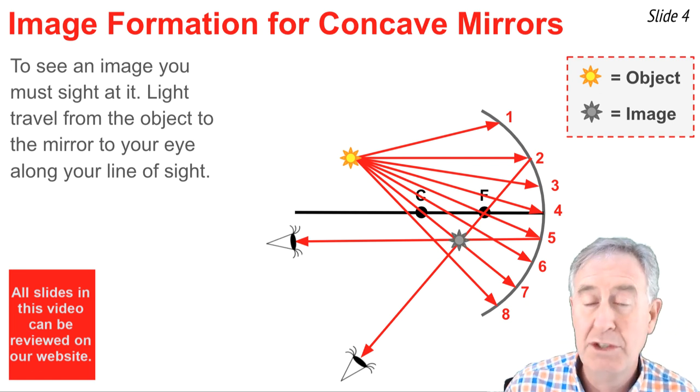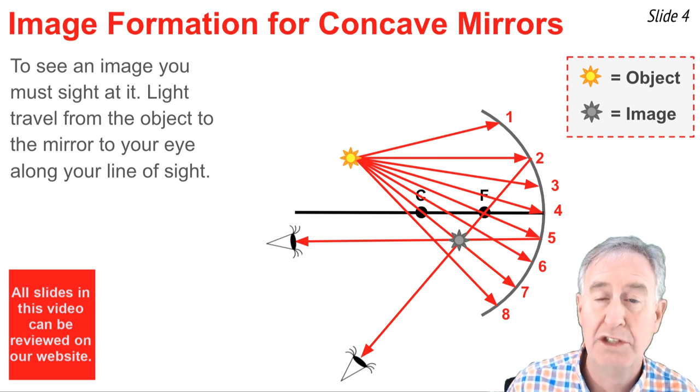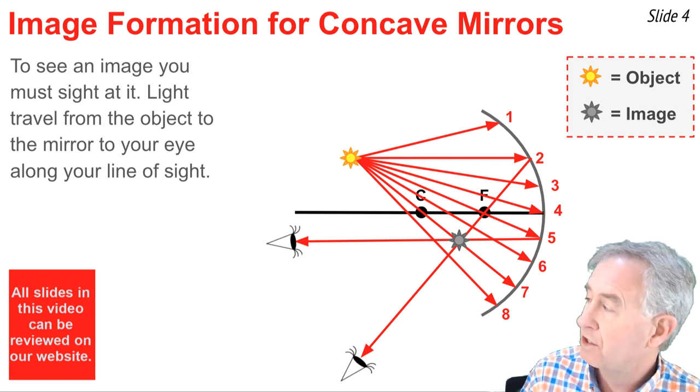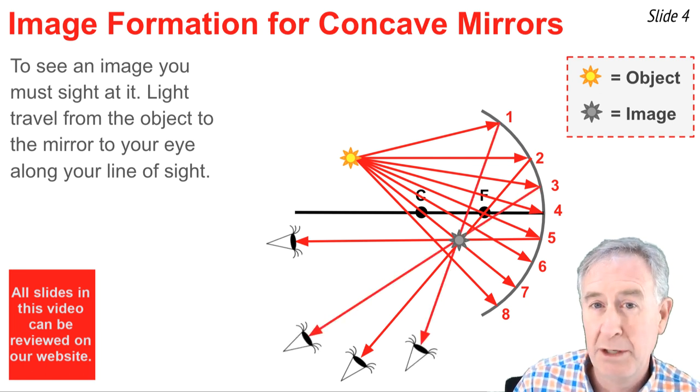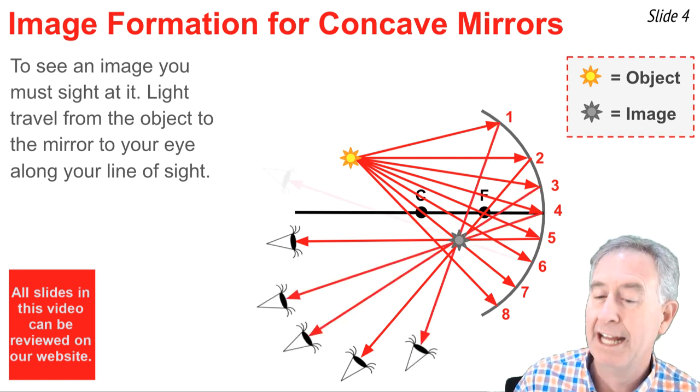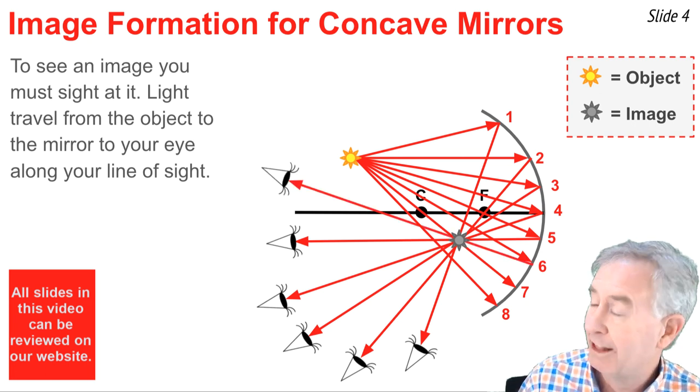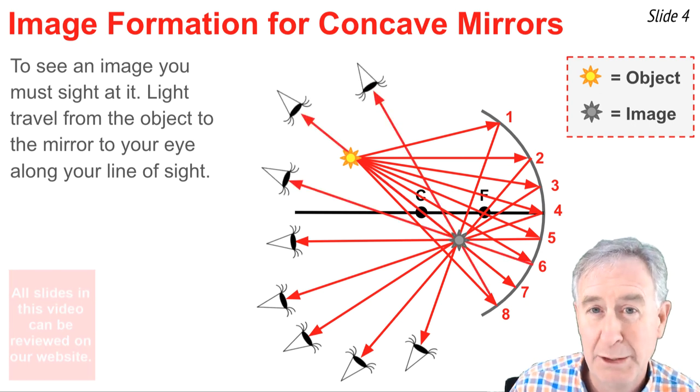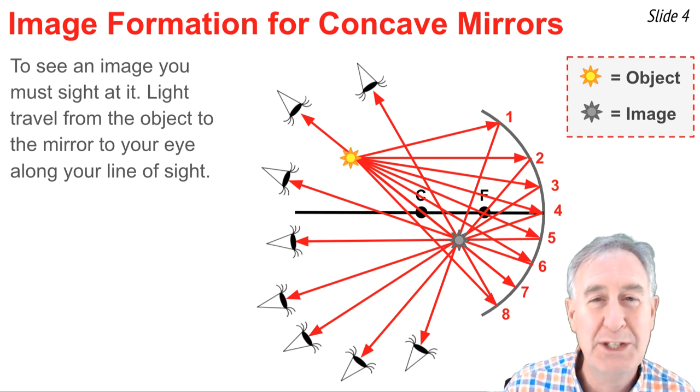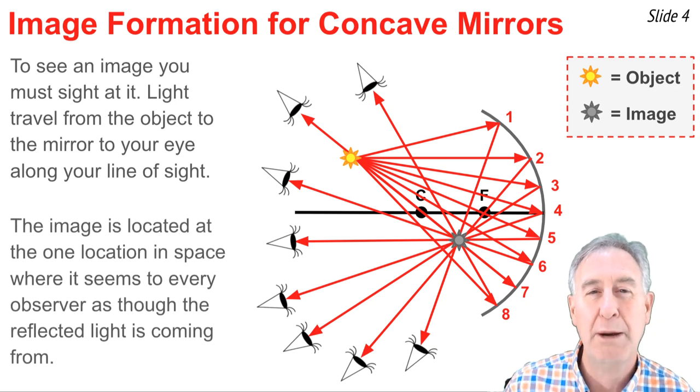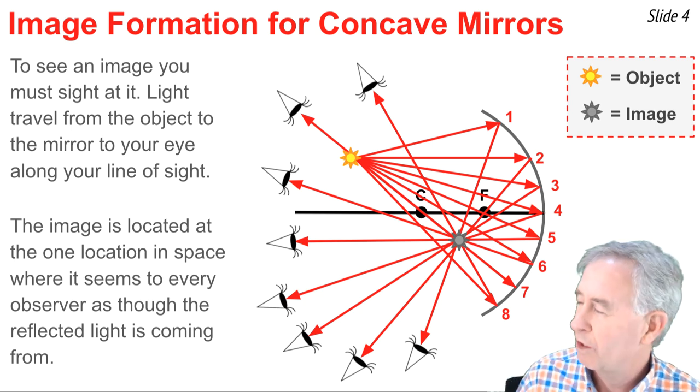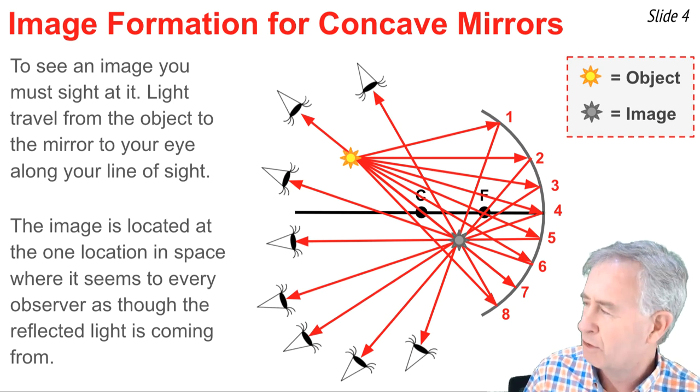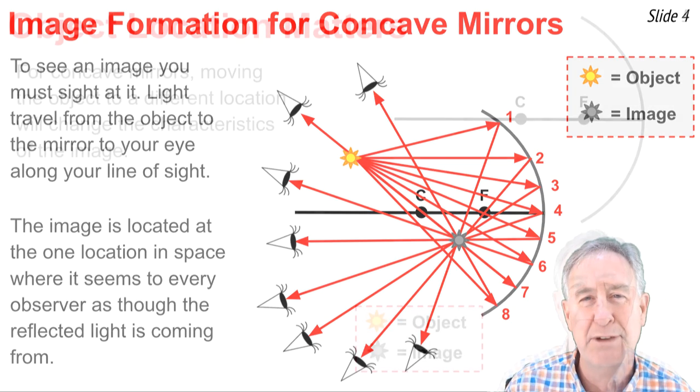Now that means that every observer has to sight at that location to see the image. So for the other six incident rays, we know that they will pass through that image location, such that an observer sighting at that location will have a ray of light coming to their eye. For this reason we say that the image is a representation or replica of the object that is present at the one location in space where it seems to every one of these observers that the reflected light is coming from.